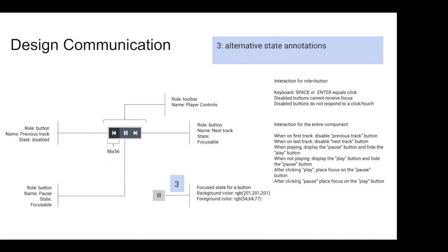We also have alternative state annotations — these go beyond hover states and include focus state (mapping out background and foreground colors), active/pressed states, etc. These are the stateful annotations required for someone to implement a component properly. Next, minimum control size annotations: WCAG requires something like 44 by 44 CSS pixels as the minimum touch target size for a control. If you're a designer not considering that, you'll hand developers something set up for defeat if you go below that 44 by 44 threshold.